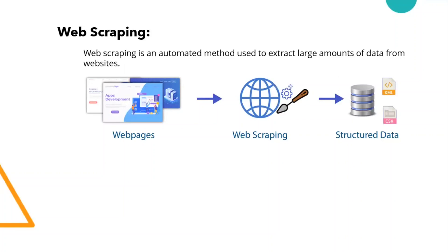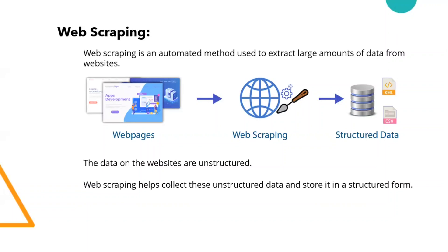For web scraping we are using BeautifulSoup with Python to make your data in a structured manner and store it into a database. Your data is available in unstructured HTML and CSS format, and we use Python to convert it into structured format. The scraped unstructured data is stored into a structured format, then into a database — here CSV and MongoDB will be our databases.